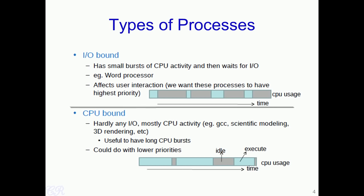On the other hand, CPU-bound processes could be given a lower priority. For instance, take a CPU-bound application like GCC compiling a large program that takes 5 minutes. It will not affect the user much if the time taken increases from 5 minutes to 5.5 minutes. Thus, CPU-bound processes can work with a lower priority.